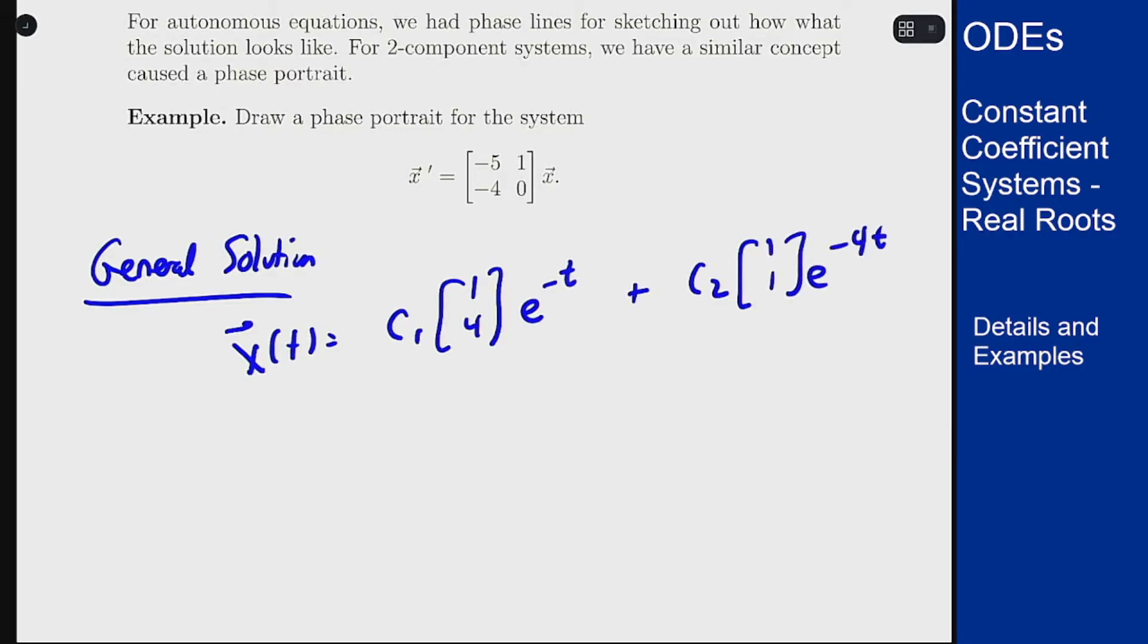Now I want to take this general solution and sketch out what they look like for different values of c1 and c2 on an xy plane, where we're thinking about x as the first component and y as the second.